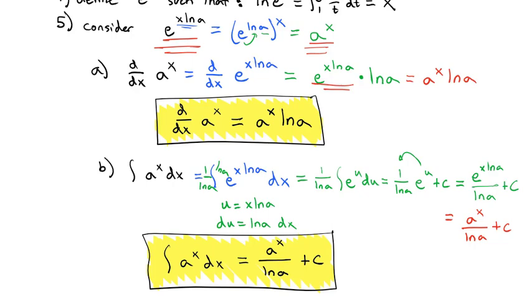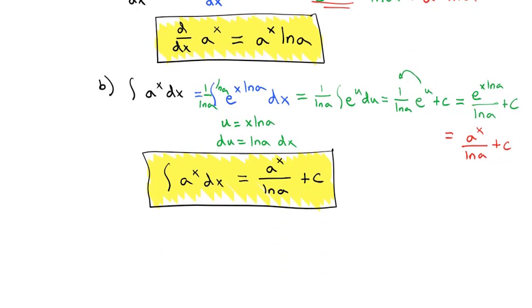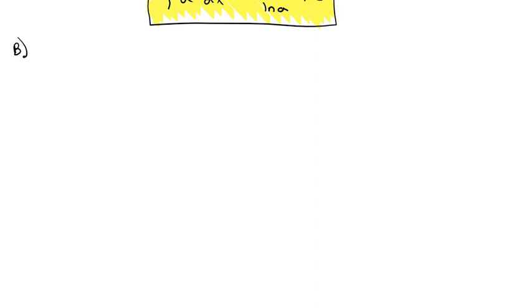These consequences come out of the original definition, and what this provides is a true understanding of how the natural log and the e to the x exponential function work. However, the emphasis of this lesson is going to be on actually taking derivatives and integrals with these functions. You've seen these derivatives before — now we just understand why they work instead of just claiming they work.